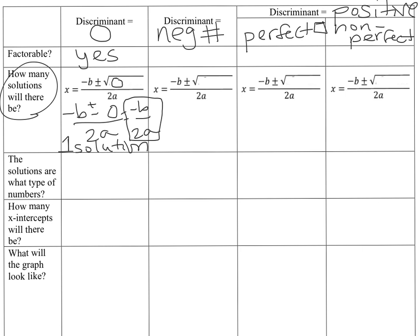What type of number is that solution? We have three types: rational, irrational, and imaginary. Imaginary numbers are what we get when trying to find the square root of a negative number — you'll learn more about those in Algebra 2. When the discriminant is zero, we get negative b over 2a — that's going to be a fraction, a whole number, or a terminating decimal — so the solution is rational.